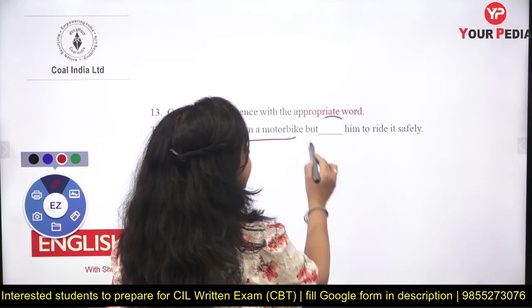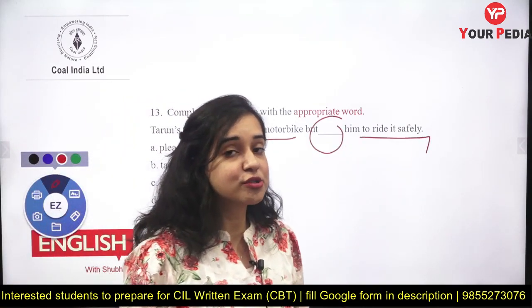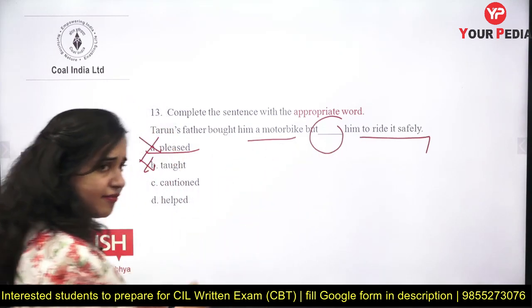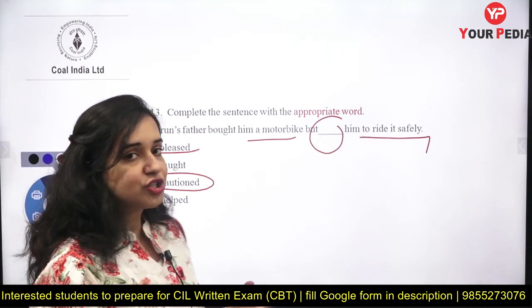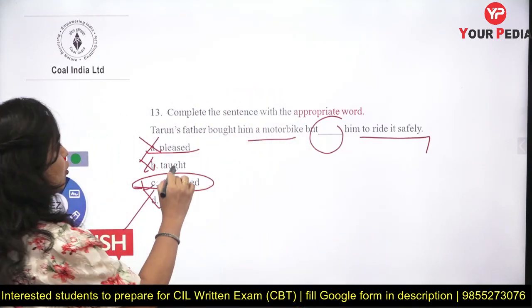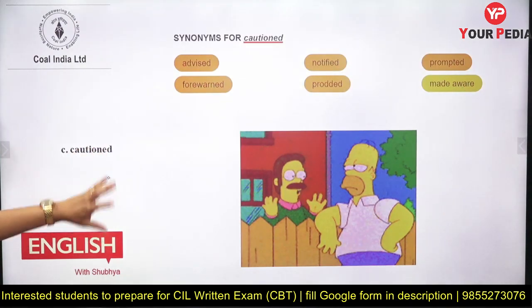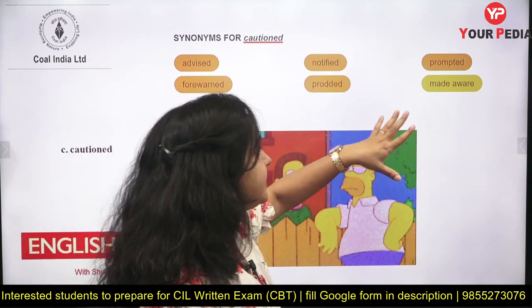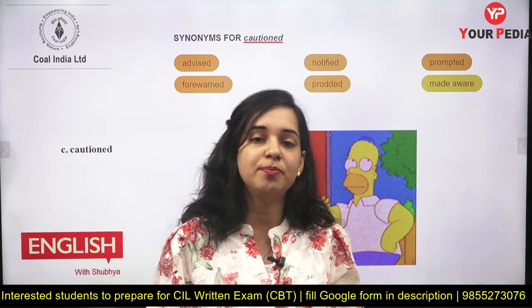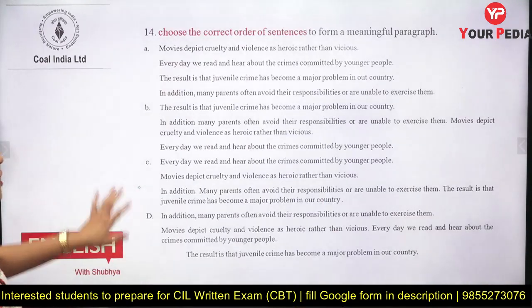Question thirteen: 'Taran's father bought him a motorbike but dash him to ride it safely.' Options: please, taught, cautioned, or advised. The father gave the bike but warned him to be careful. The answer is 'cautioned.' Cautioned means warning someone — making them aware of potential danger. It is a type of advice for the future — a kind of foresight for safety.